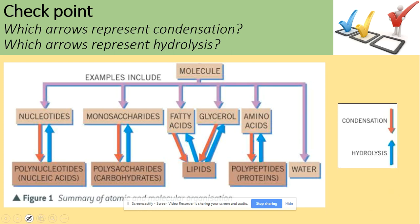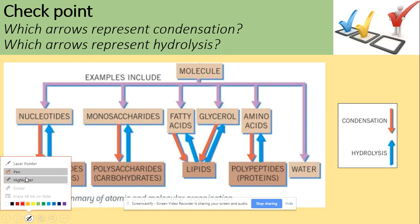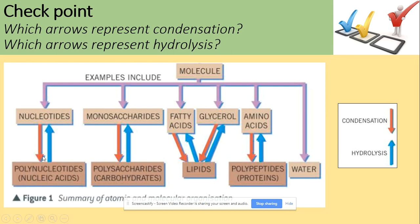The answer: the red colour shows the condensation reaction, which makes polymers from monomers, and the hydrolysis reaction is the one that breaks polymers into monomers. That's everything for monomers and polymers.